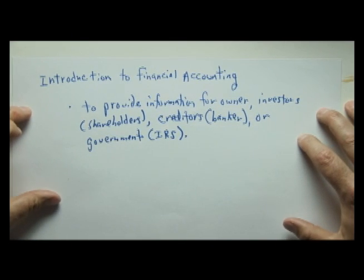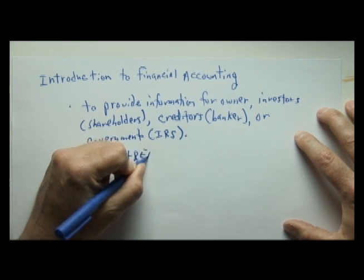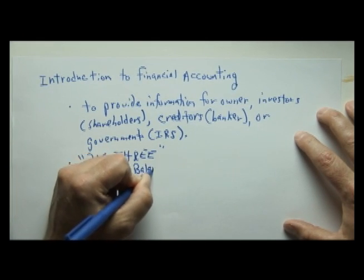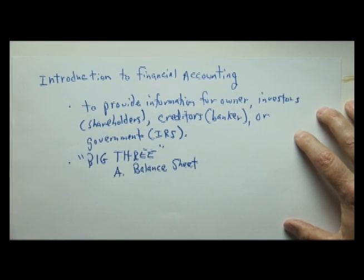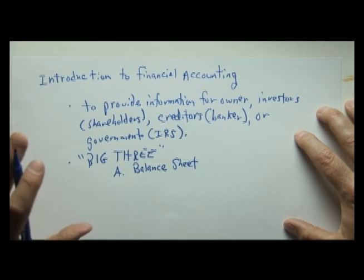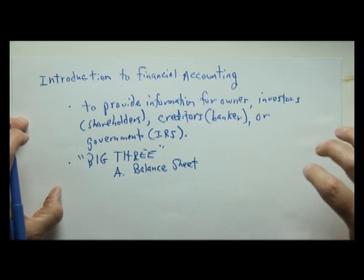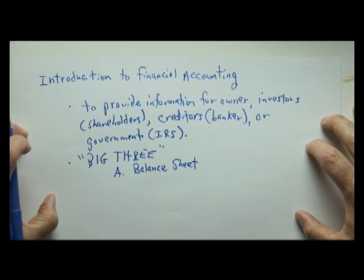The output of a good accounting system is three main financial statements — I call these the big three financials. The first of these is called the balance sheet. A balance sheet is a summary of what an entity, a business entity, owns, and also what the business owes, as in debts. A balance sheet shows what a business owns on the left, and on the right, it shows to whom the business owes money. The difference between everything a business owns and what it owes is called net worth, or equity.